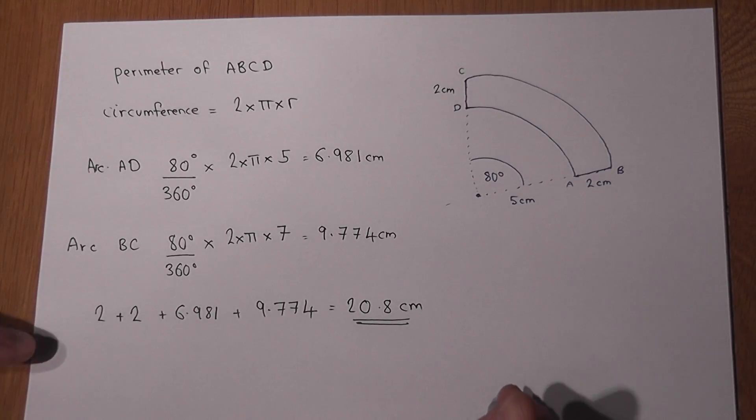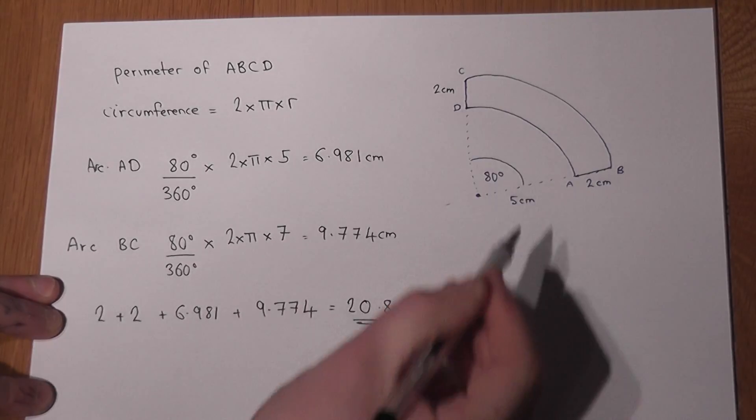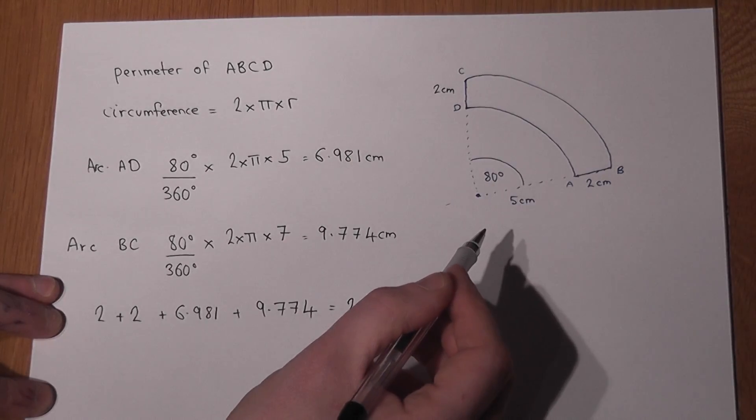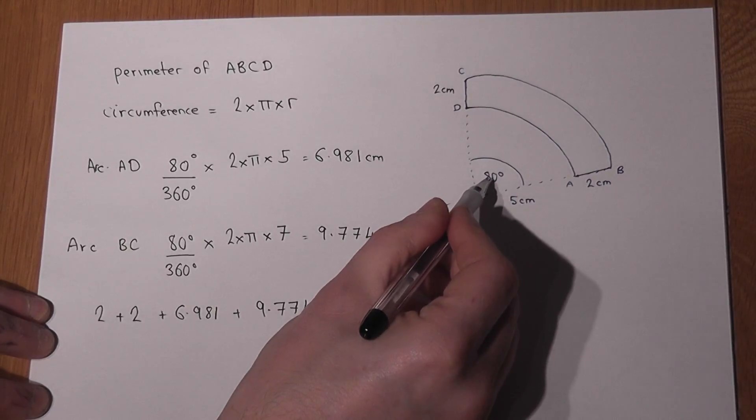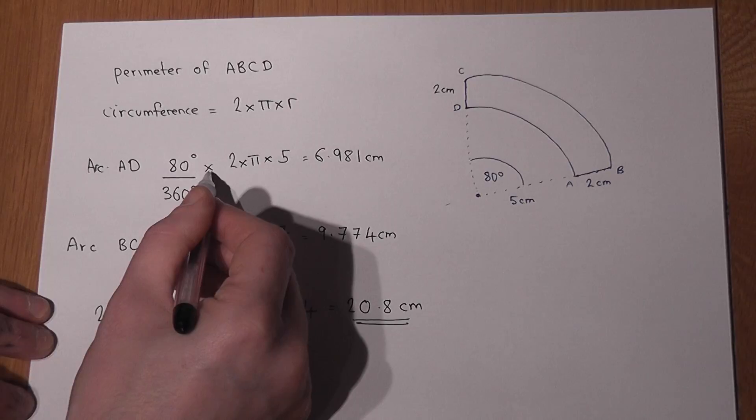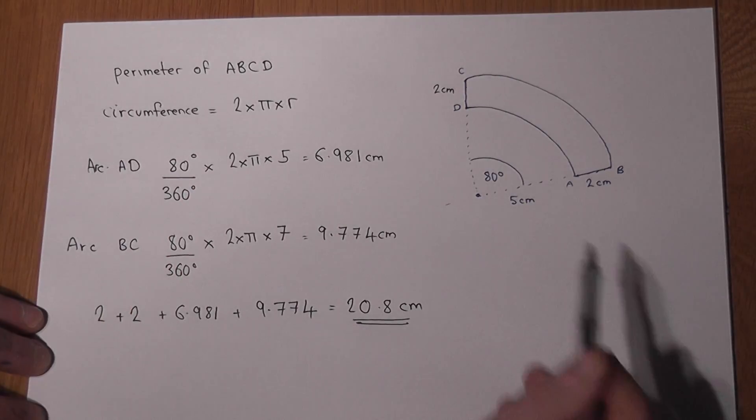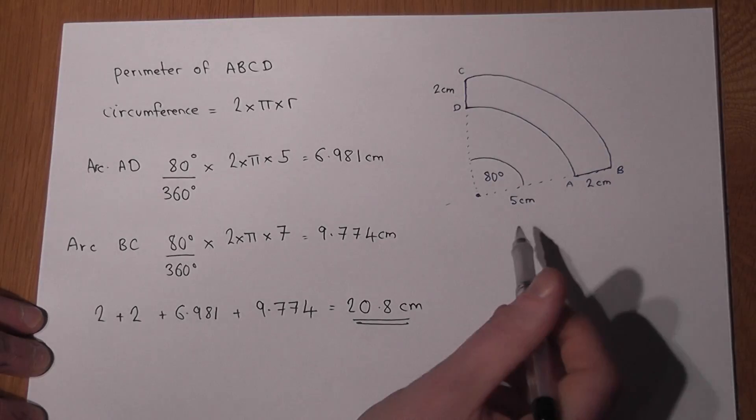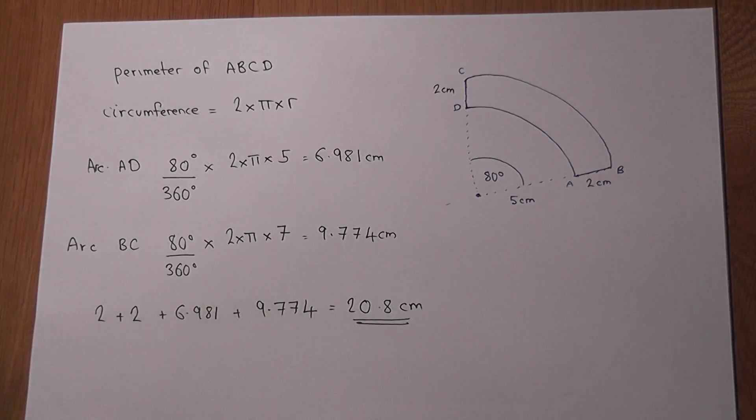And the key thing again to remember is that to find an arc length, we do the fraction of the full circle, using the angle, and just multiply by 2 times pi times the radius, which for the smaller one was 5, then for the larger arc length was 7.